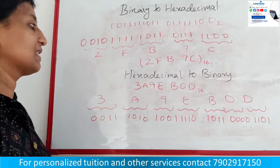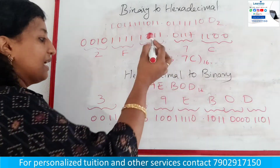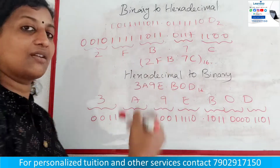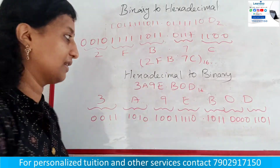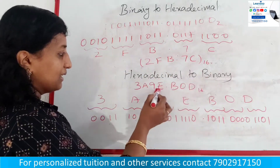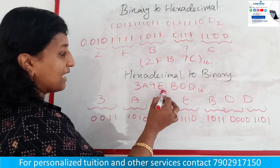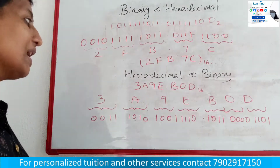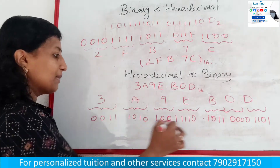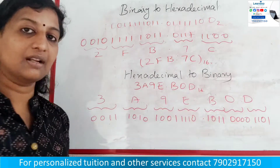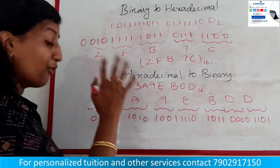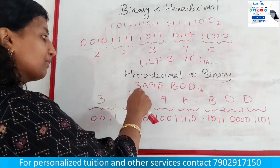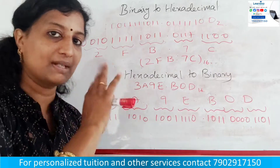Now for the binary function — hexadecimal to binary — we use the same procedure. The hexadecimal value is 3A900. For each hex digit, we expand it into a 4-bit binary group. We have 4 bits for each digit.